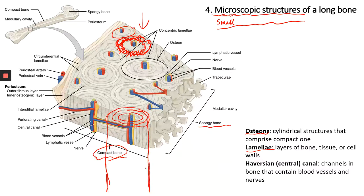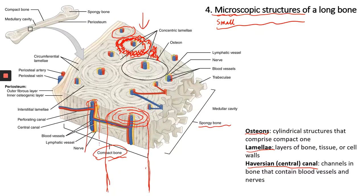You may also have lamellae in between the osteons — that's also called lamellae. The next major structure is called the Haversian or central canal, which is in the center of each osteon. There's a big cavity right there, and you can find blood vessels, lymphatic vessels, and nerves in the Haversian or central canal. Those are the basic structures of osteons, which make up compact bone.